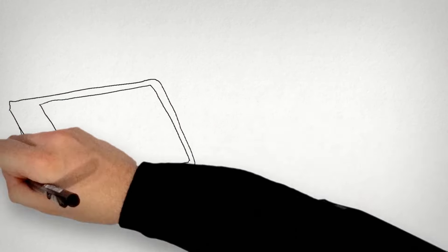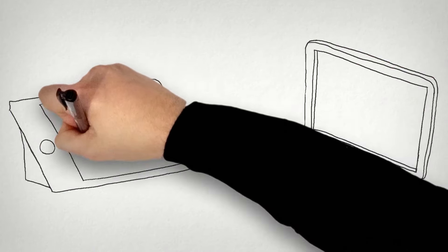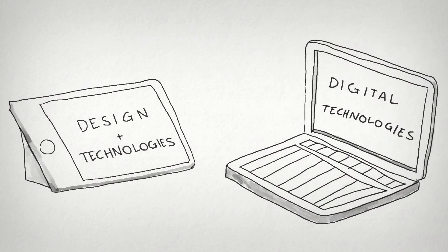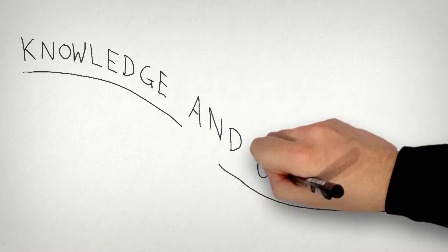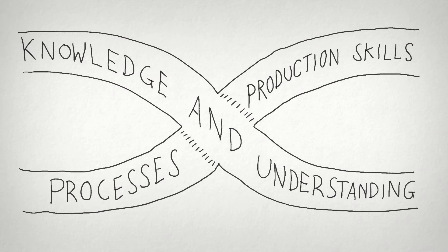Technologies in the Australian curriculum are divided into two distinct but connected subjects. They are design and technologies and digital technologies. Both of these subjects have two interwoven strands, knowledge and understanding, and processes and production skills.